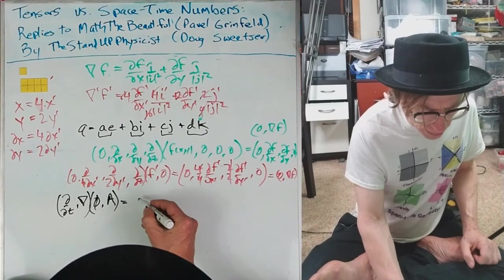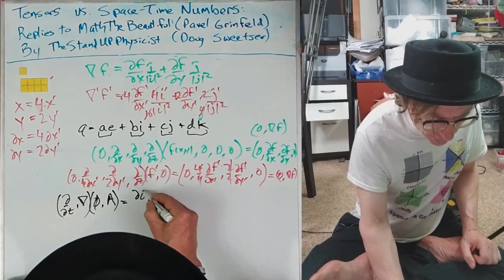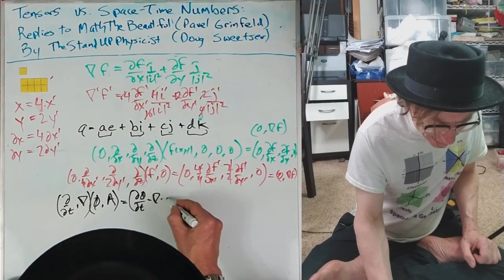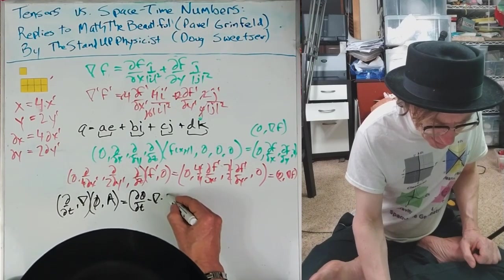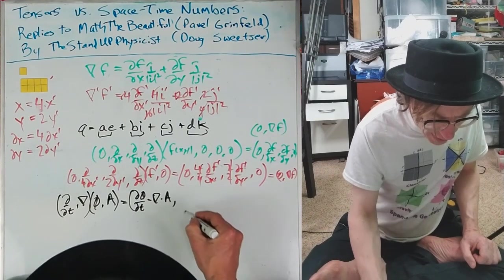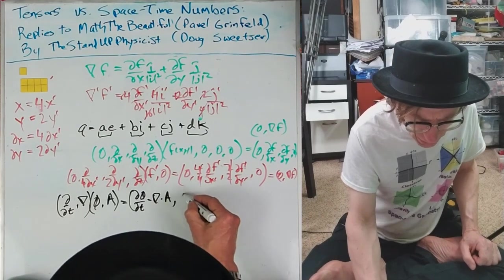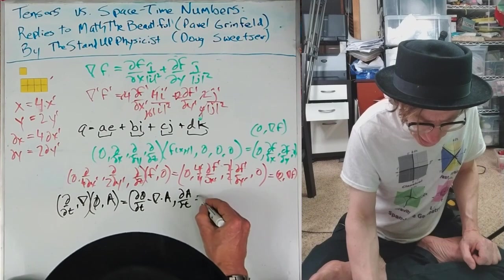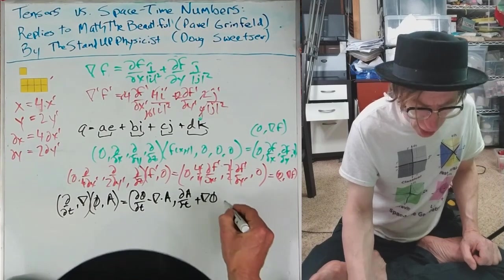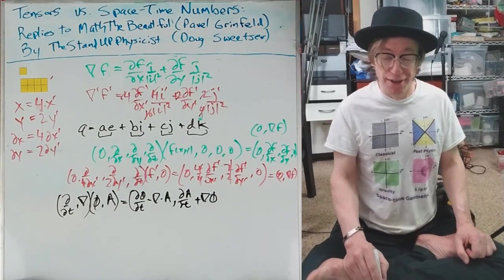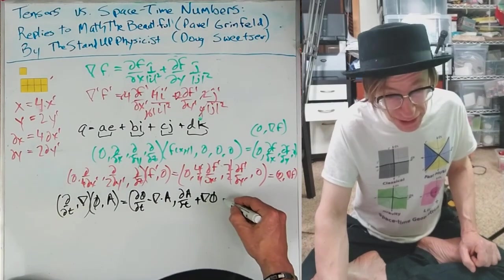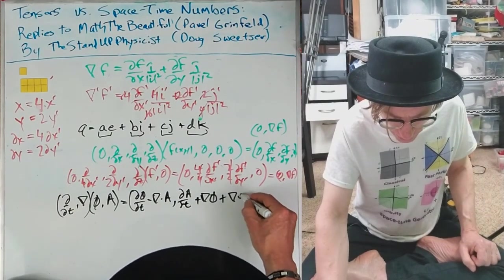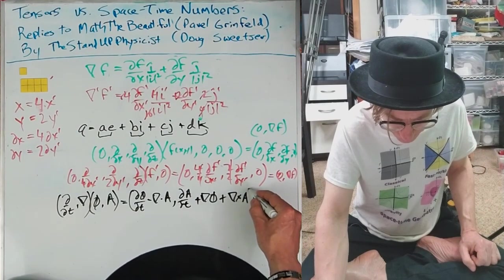And we just multiply this all out. And that means you do first minus last. D phi, DT minus last. That's A, del dot. It is in A. Then we do out E, D A, D T, any grad fee. Oh, there's grad fee. I knew it was in here somewhere. And then the curl of A. That's great. All right.